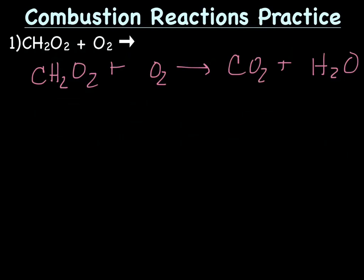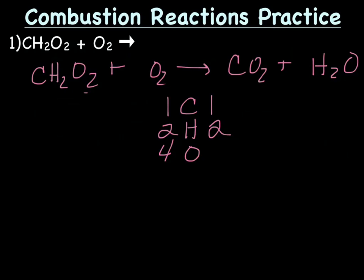We'll start by making a list of our atoms — carbons, hydrogens, and oxygens. On the reactant side we have one carbon; one carbon on the product side. Hydrogens on the reactant side: we have two, and two on the product side. Oxygens — because we have oxygens in both CH₂O₂ and O₂ — we have a total of four oxygens on the reactant side. On the product side we have two and one, so a total of three. Our carbons are good and our hydrogens are good so far, but we've got those oxygens: four on the reactant side and three on the product side. There's no way to magically turn a three into a four.